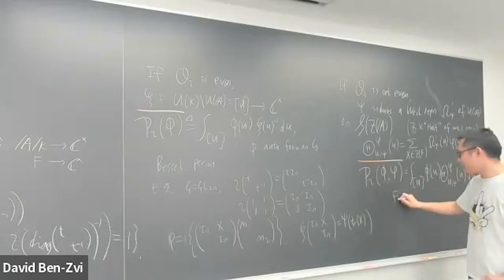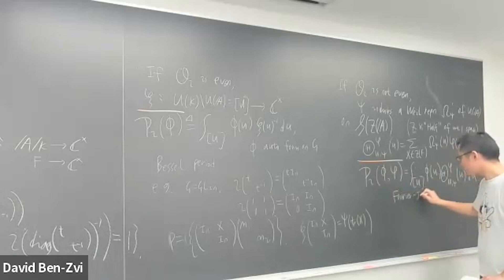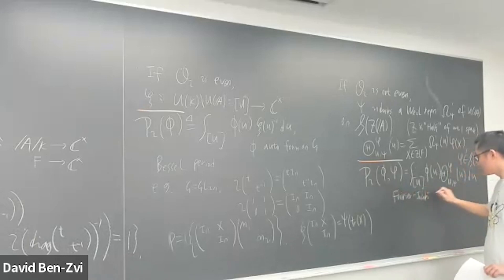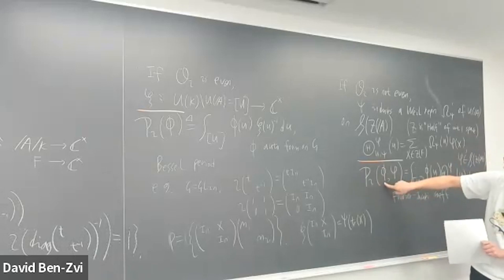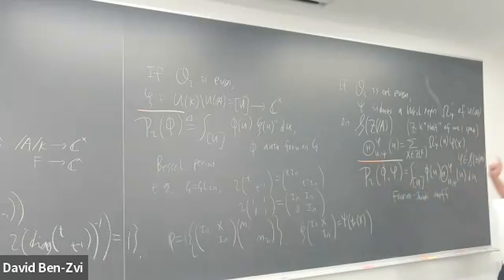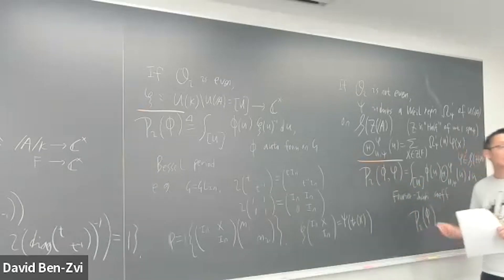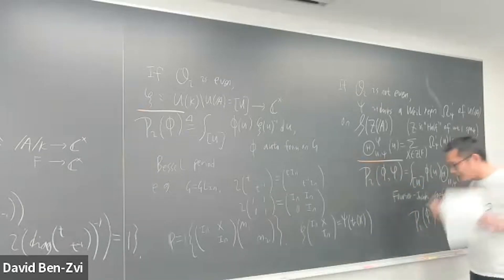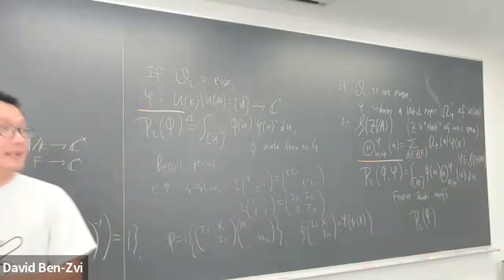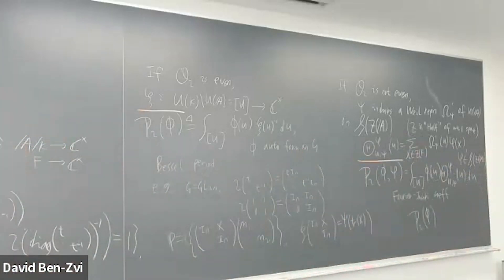This is always called the Fourier-Jacobi period. In the even case you just have a character, but in the not-even case you have a theta series on this unipotent. Then you can define the period. So now this period P_iota also depends on the choice of phi, the Schwartz function. I will always just use P_iota(phi) to denote this integral. So the choice of Schwartz function should be kept in mind.